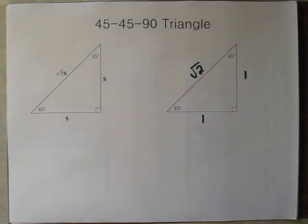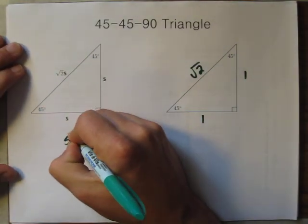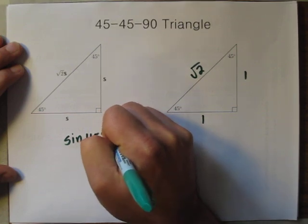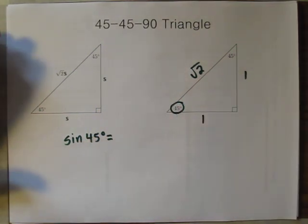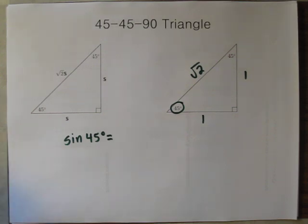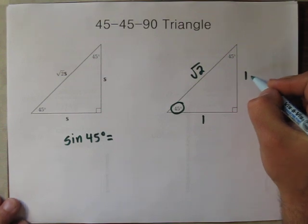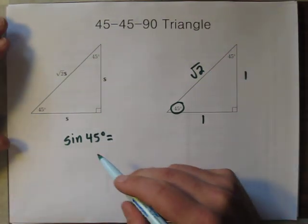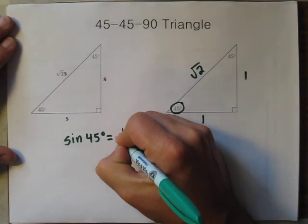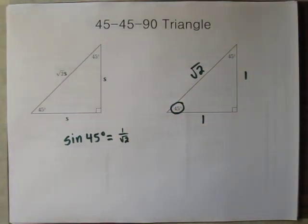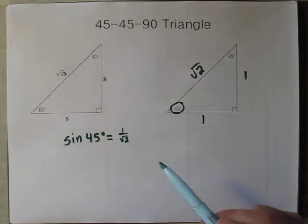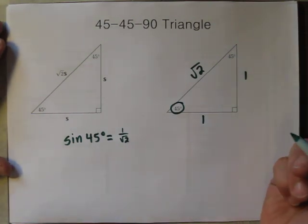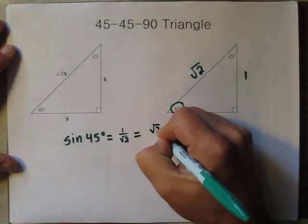1 times √2 is just √2. With these measurements, we can now evaluate the trigonometric functions for 45 degrees. Looking at this 45-degree angle, sine 45 degrees is the ratio of the opposite side — this 1 — over the hypotenuse, this √2. So sine 45 degrees is 1 over √2. We usually don't like radicals in the denominators of fractions, so we have to rationalize. After rationalizing, we end up with √2 over 2.